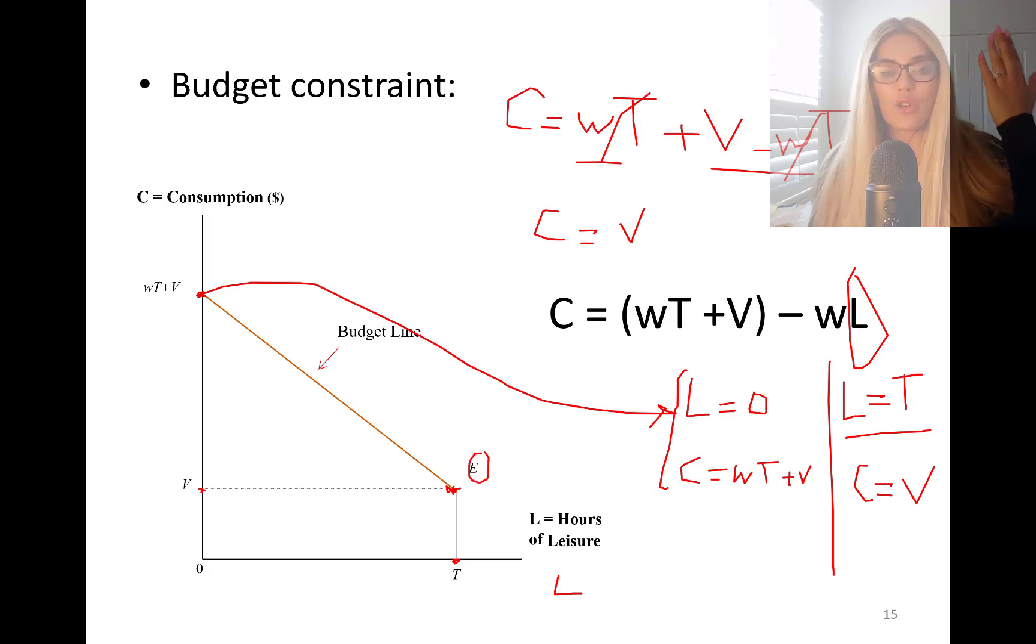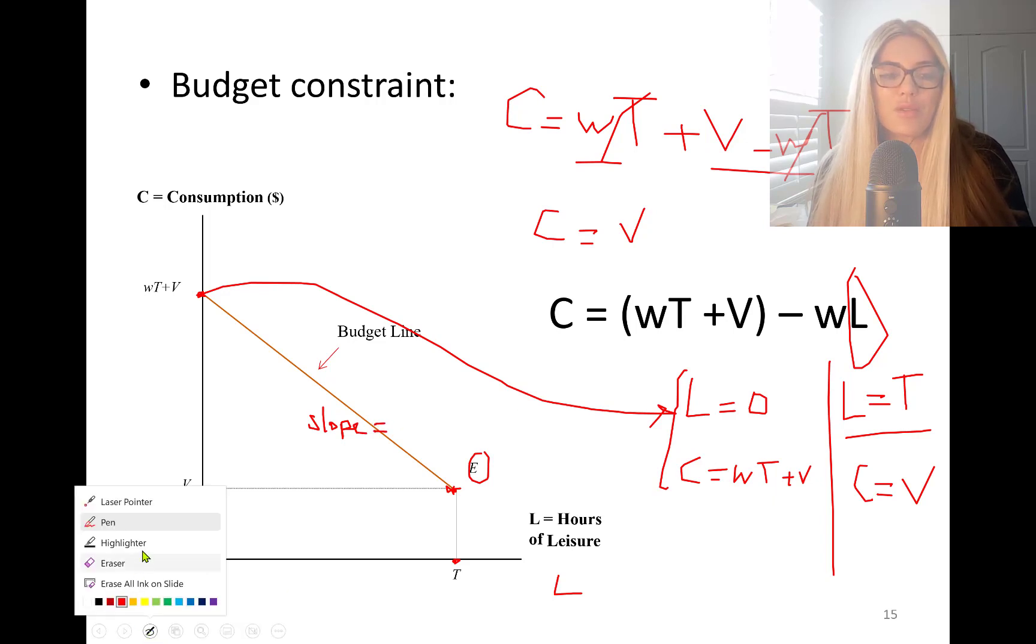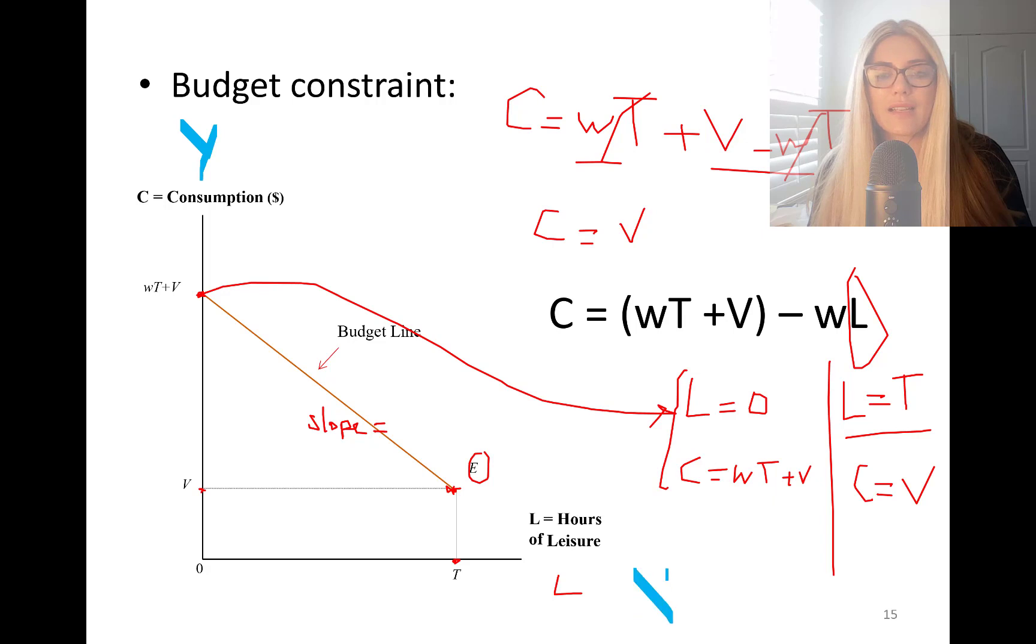So this is what our budget line looks like. And the slope of this budget line, slope will be right here, folks. I'm just going to show you something. This is Y axis. This is X axis. Consumption is like Y. This is like X. The coefficient of that X variable, which is leisure, is going to be your slope. Slope is negative W.